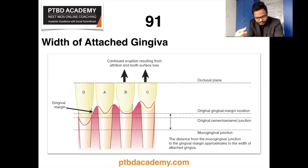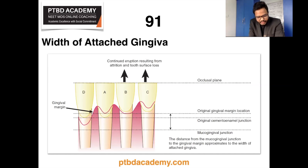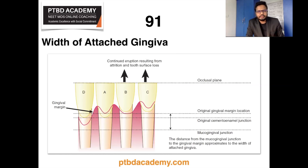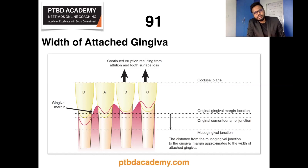In illustration D, there is no wear of the incisal edge; however, the gingiva has moved apically and clinical recession is evident. Because of this, the width of attached gingival is reduced. So depending on the parameters, there can be an increase, decrease, or no change in width of attached gingival.